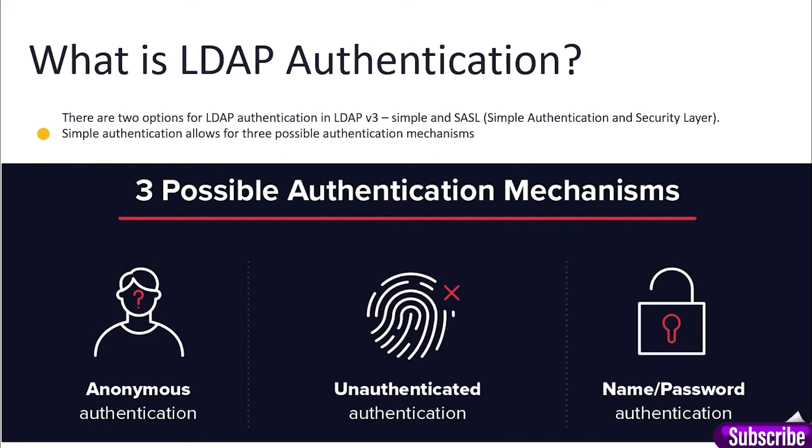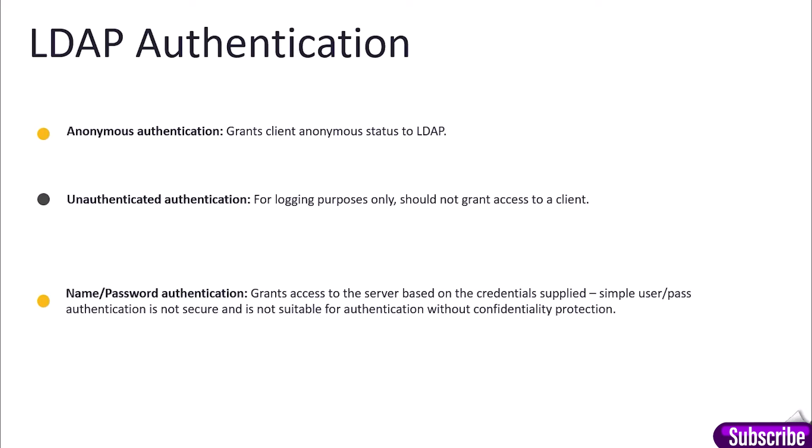What is LDAP authentication? There are two options for LDAP authentication in LDAPv3: Simple and SASL (Simple Authentication and Security Layer). Simple authentication allows for three possible authentication mechanisms: anonymous authentication, unauthenticated authentication, and name-and-password authentication. Anonymous authentication grants the client anonymous status to LDAP. Unauthenticated authentication is for logging purposes only and should not grant access to a client. Name-and-password authentication grants access to the server based on the credentials supplied. Simple user password authentication is not secure and is not suitable for authentication without confidentiality protection.